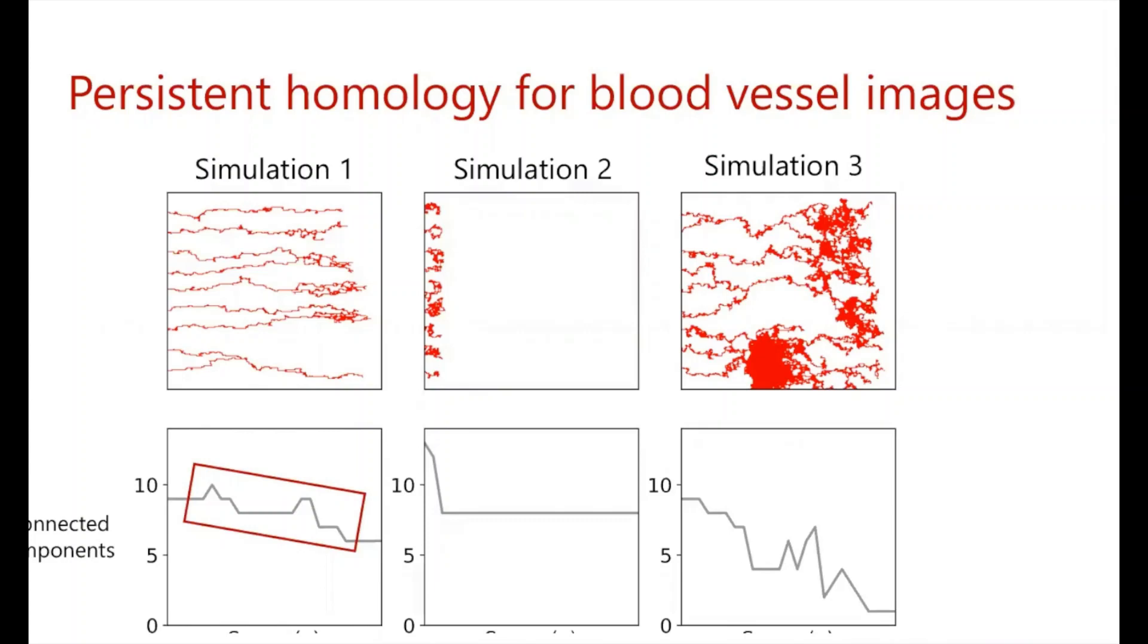In the middle, we have simulation two, which has very short networks that didn't migrate very far. And so we observe that the number of connected components moving left to right simply flatlines once it's passed each image.